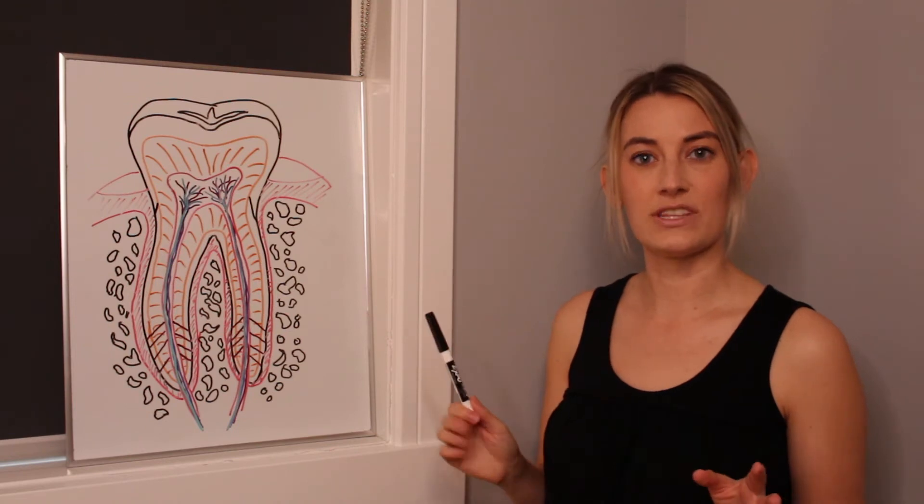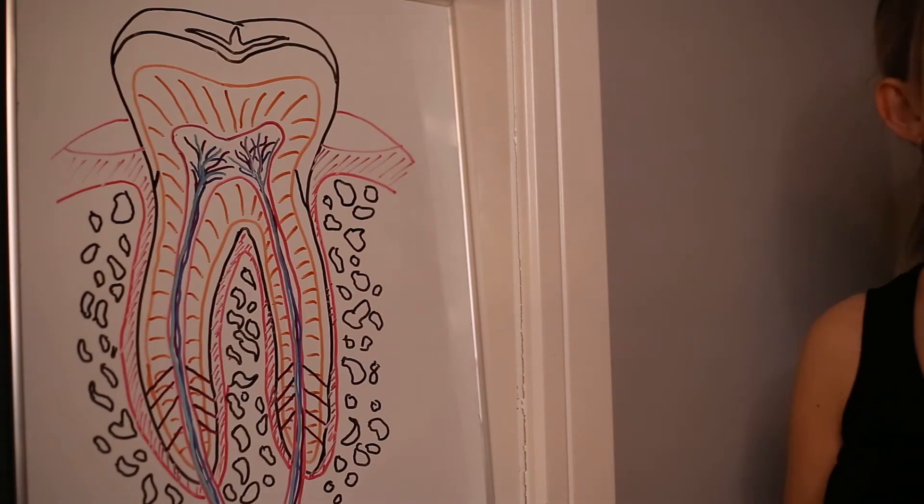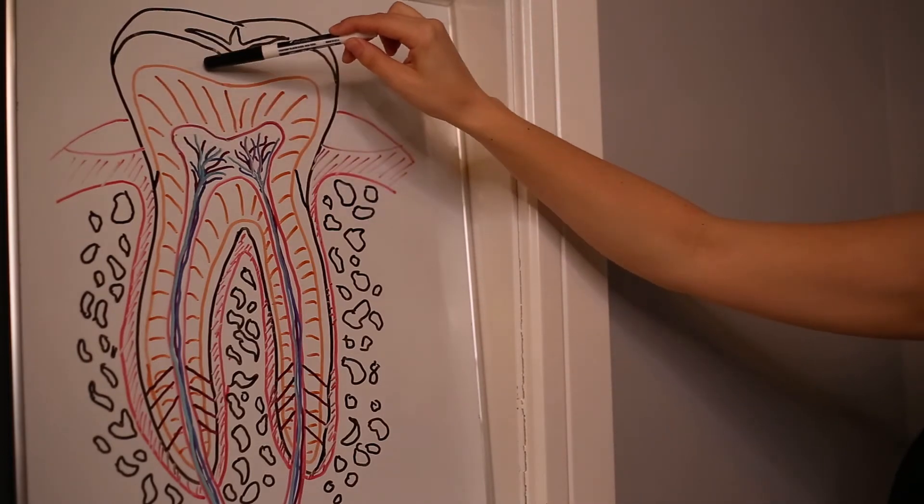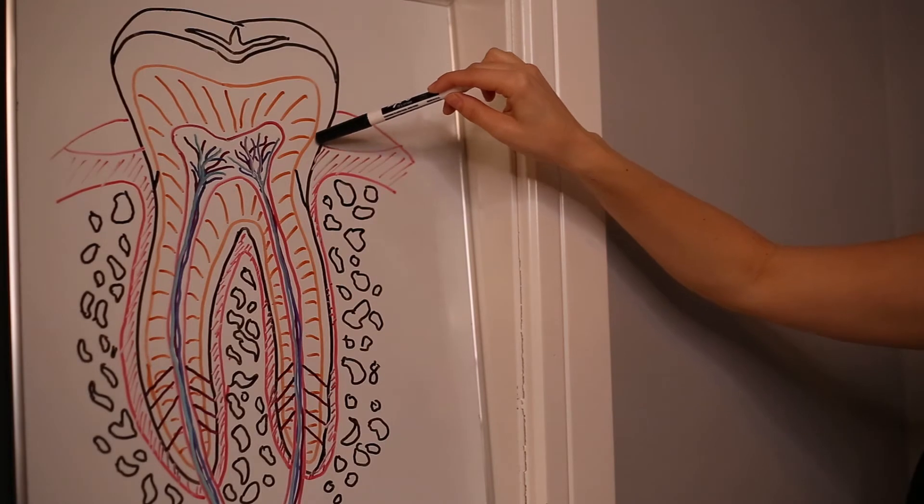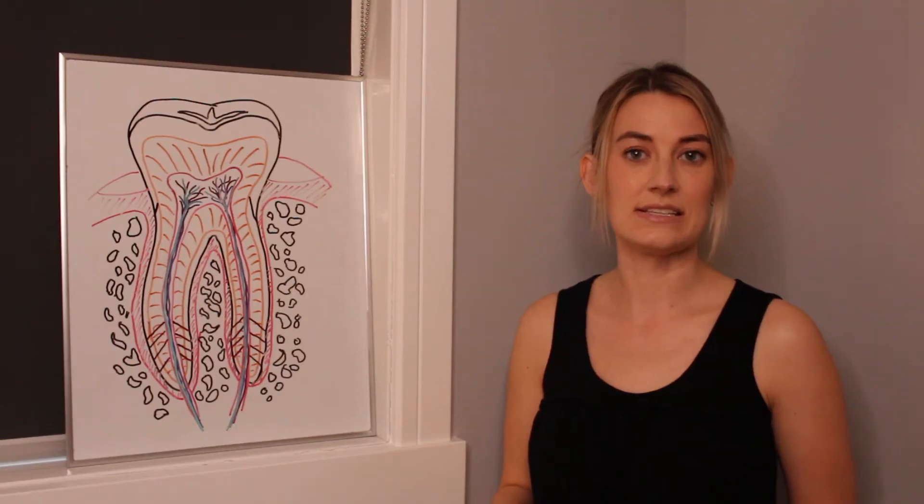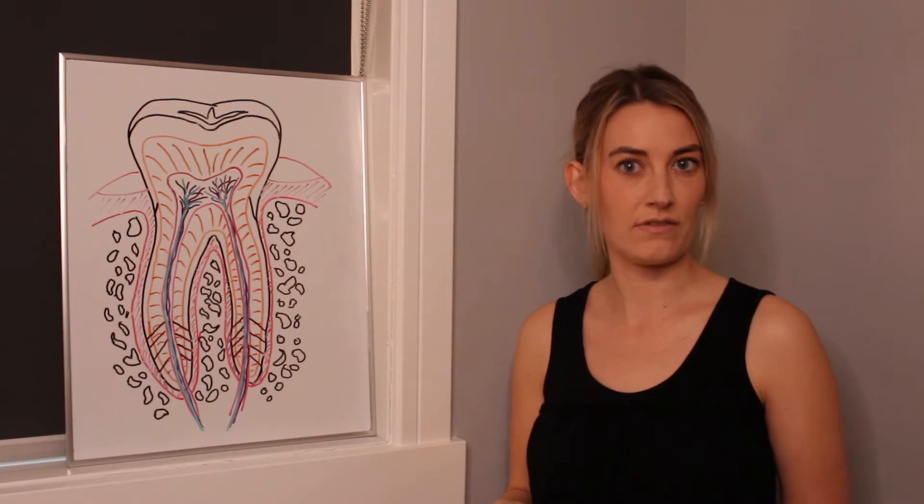So starting off, on the crown portion there's three layers to it. The outermost layer is something called the enamel. So the enamel on this picture encompasses this all the way around here. So it's what we see in our teeth. Now enamel is the hardest substance in our body. There's a fun little trivia fact for you.